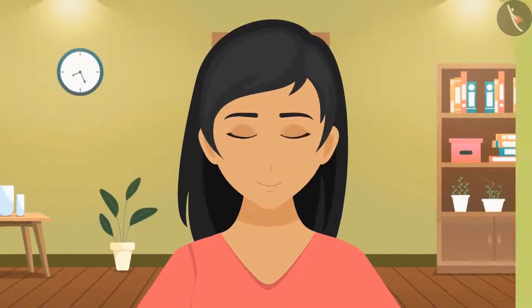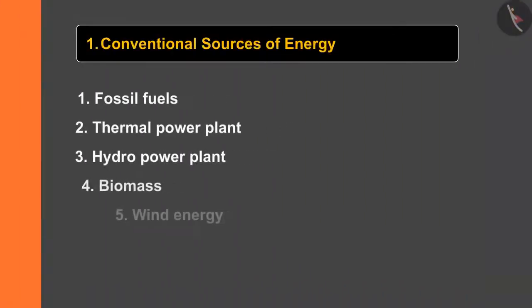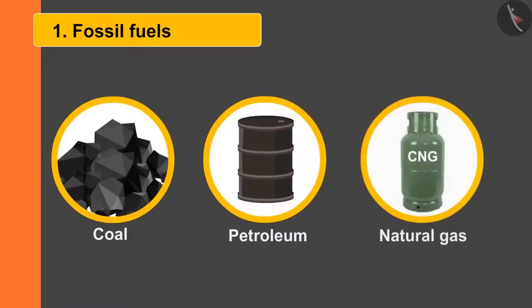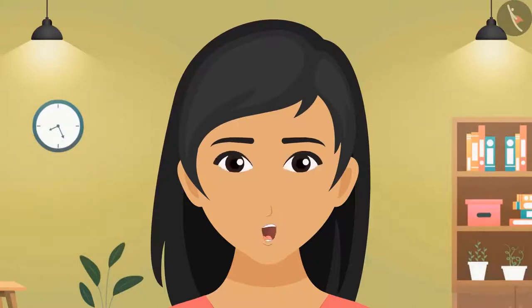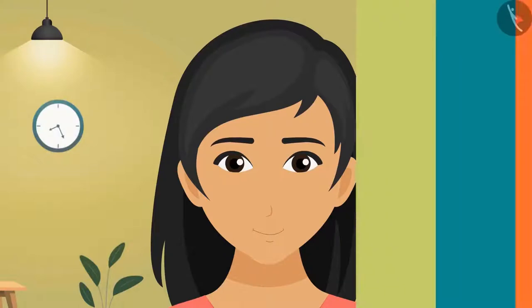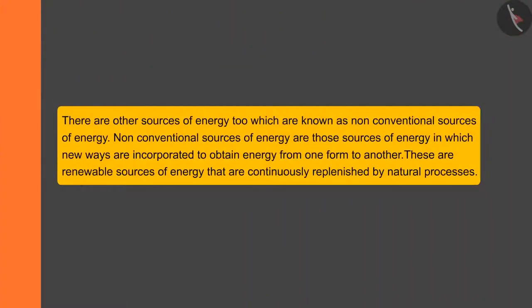As we learned about conventional sources of energy and how electrical energy is obtained from various kinds of energy, the main source is fossil fuels. The rate at which these fossil fuels are being used, there will come a time when they will become extinct — then from where will we get energy? There are other sources too, known as non-conventional sources of energy, in which new ways are incorporated to obtain energy from one form to another.